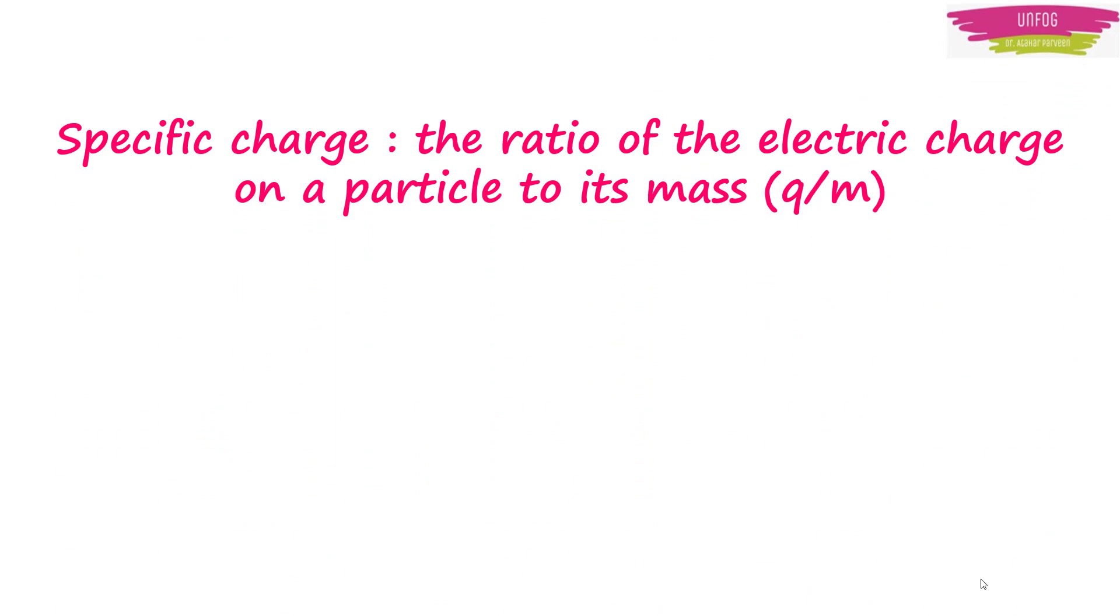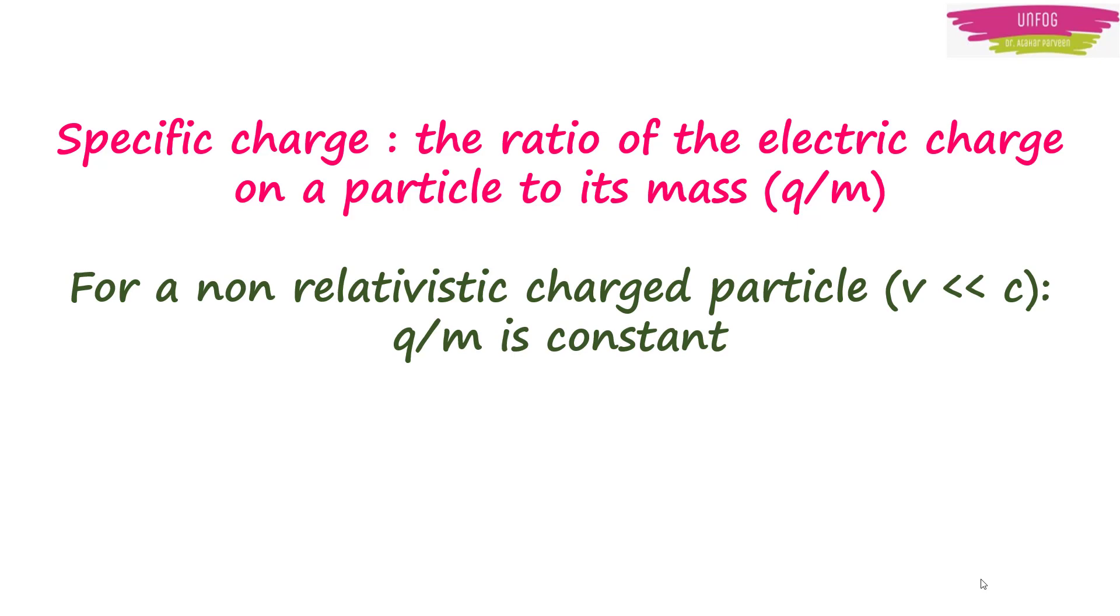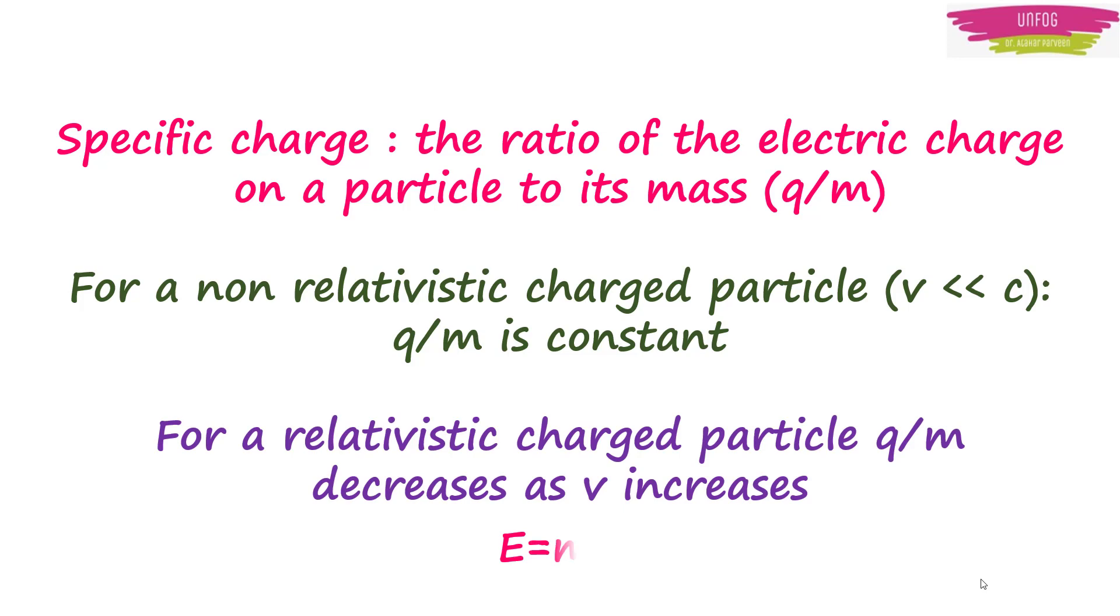There is a term known as specific charge, which is used for the ratio of electric charge on a particle to its mass, that is q/m. For a non-relativistic charged particle, that is for a charged particle whose velocity is very much less than speed of light, specific charge q/m is constant, whereas for a relativistic charged particle, this specific charge q/m decreases as its velocity increases.